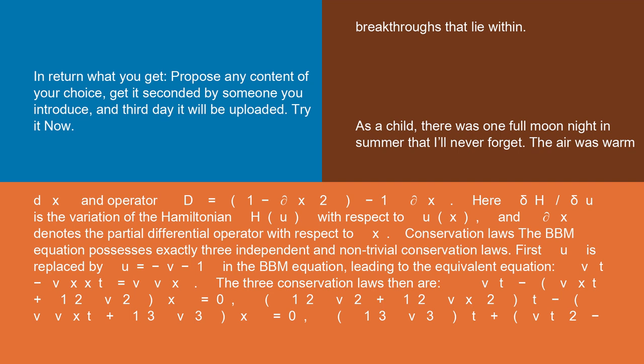Here δH/δu is the variational derivative of the Hamiltonian H with respect to u(x), and ∂_x denotes the partial differential operator with respect to x.